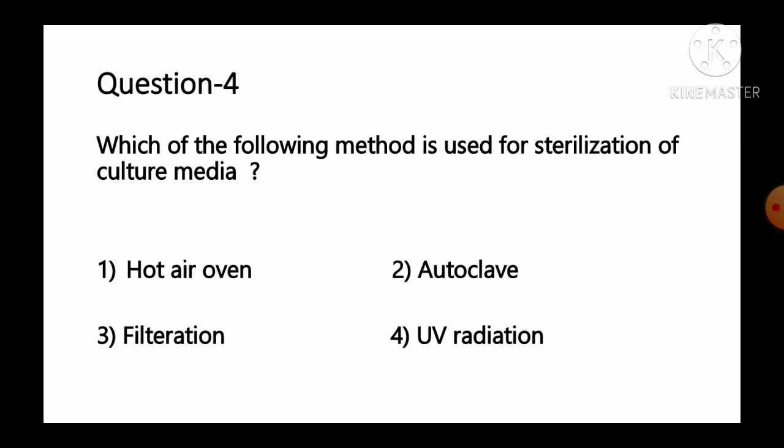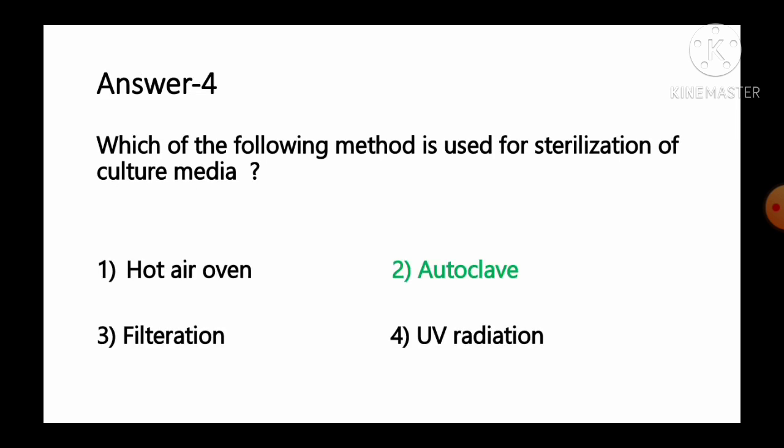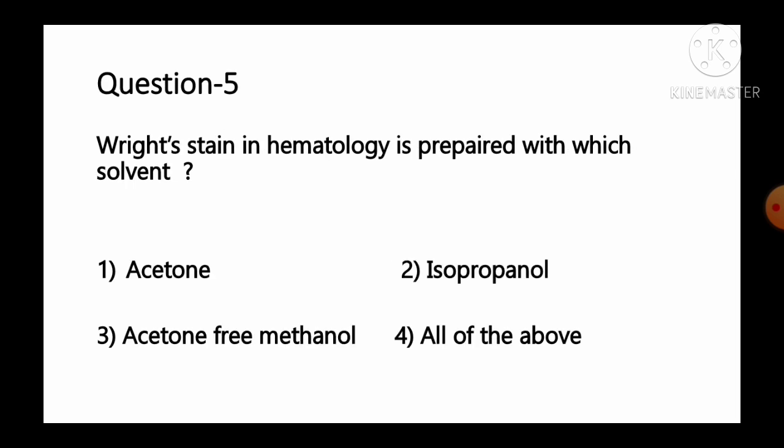Question number 4: Which of the following method is used for the sterilization of culture media? Options: 1 hot air oven, 2 autoclave, 3 filtration, 4 UV radiation. Most culture medias require final sterilization in an autoclave at 121 degrees Celsius for 20 minutes. So option number 2, autoclave, is the correct answer.